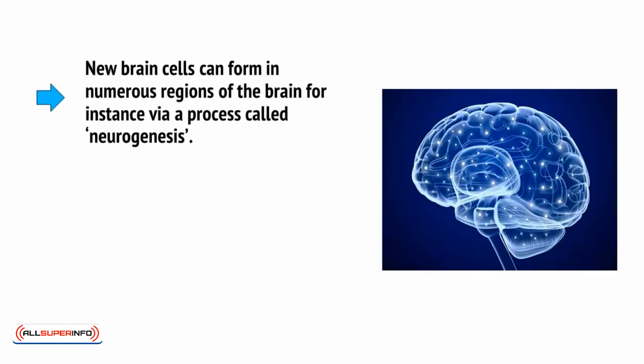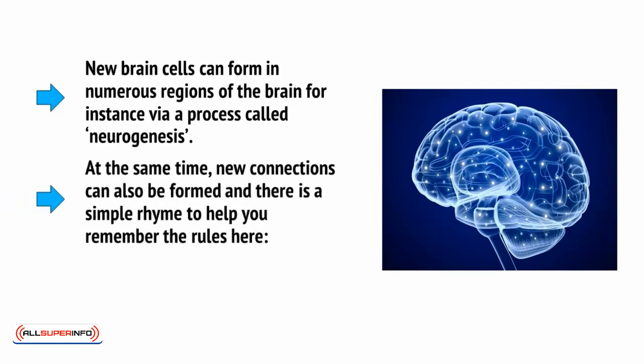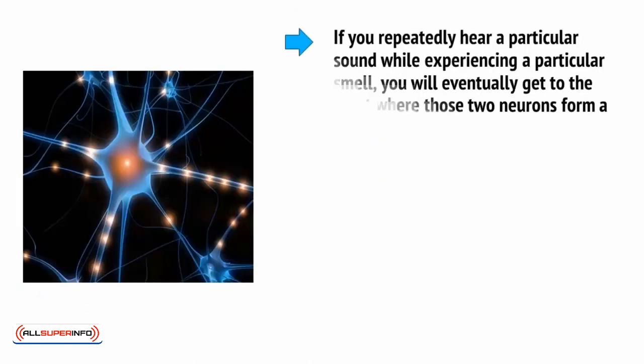New brain cells can form in numerous regions of the brain, for instance, via a process called neurogenesis. At the same time, new connections can also be formed, and there is a simple rhyme to help you remember the rules here. Neurons that fire together wire together. In other words, if you repeatedly hear a particular sound while experiencing a particular smell, you'll eventually get to the point where those two neurons form a connection.